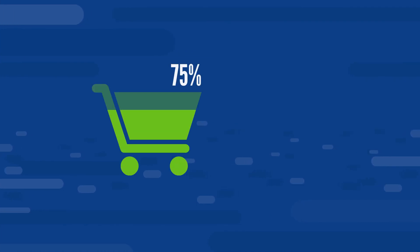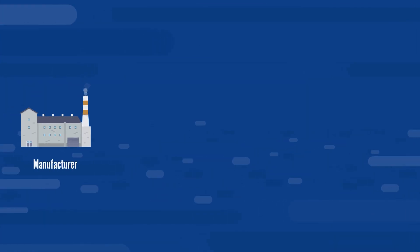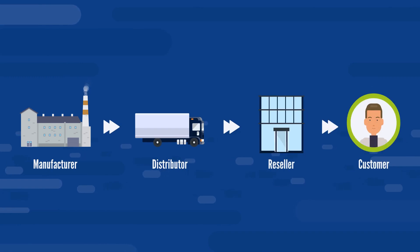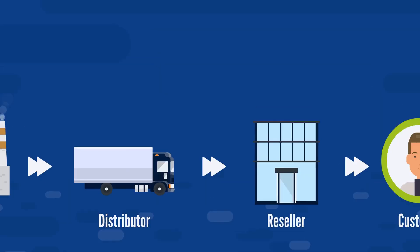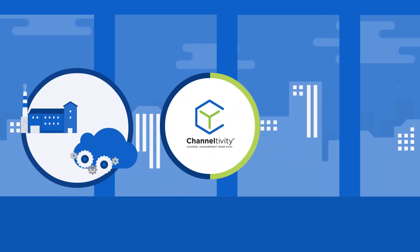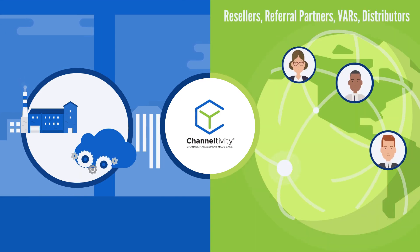According to Forrester Research, 75% of goods and services are sold through an indirect channel. Channeltivity makes this easy. Our software helps manufacturers and software companies run successful channel programs.